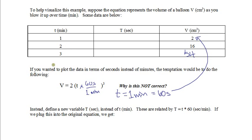So instead what we're going to do is define a new variable, which is big T, which is measured in seconds, and use that instead of little t, which is measured in minutes. If we fill out our table here, big T in seconds would be 60, then 120, and then 180.